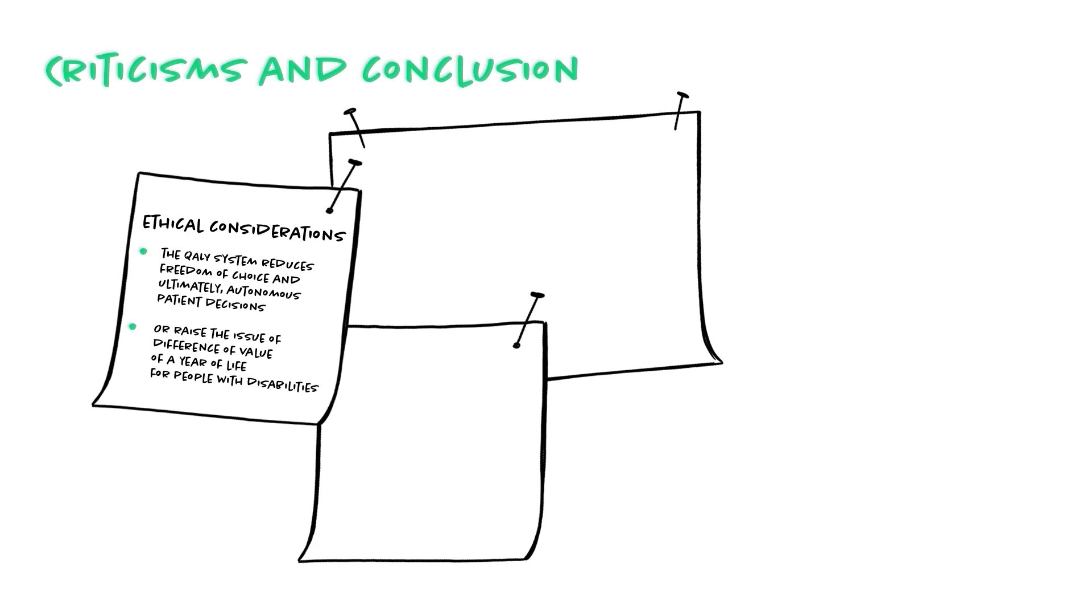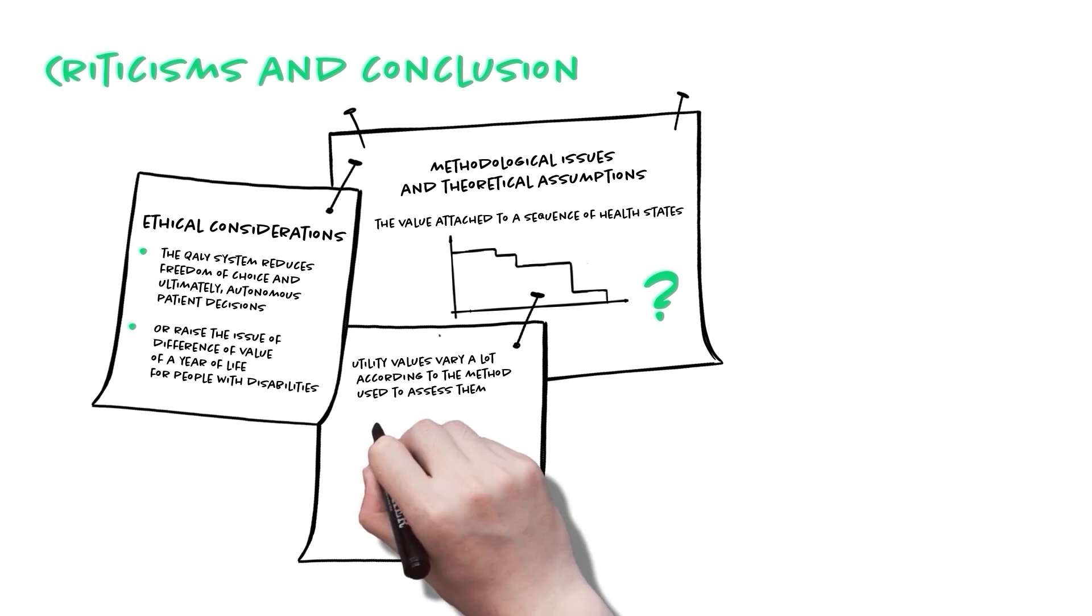There are also methodological issues and theoretical assumptions. QALYs assume that the value attached to a sequence of health states is independent of the chronological order of the health states. Look at these graphs. Should they really be equal in terms of QALYs? Utility values vary a lot according to the method used to assess them. If you don't know which method to choose, check out the video on utilities values.